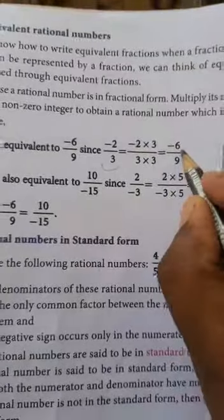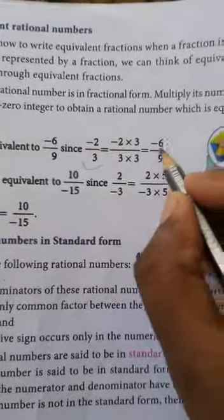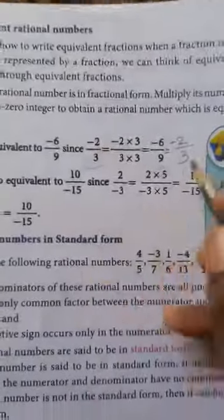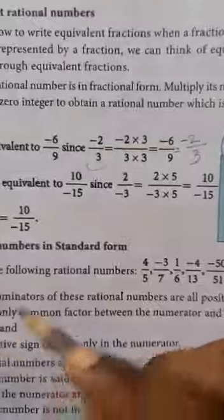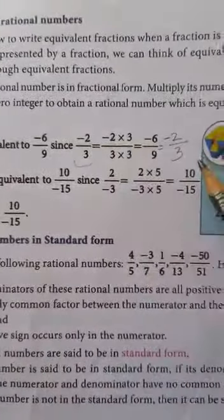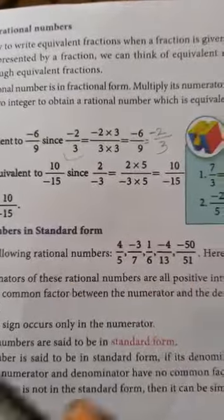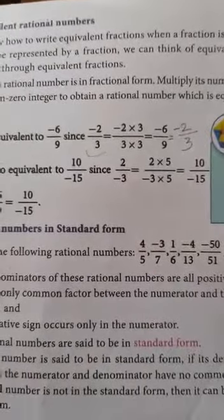If we short this one, see 3 table. 3 2's are 6 minus, then 3 3's are 9 which gives minus 2 by 3. So, this is the equivalence. Equivalent rational number. This relation is known as equivalence.